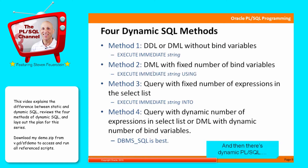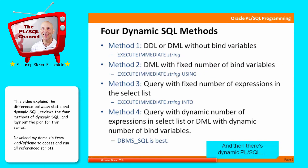The basic idea of method two is that you take variable values in your program and bind them into your string using the using clause. So when executing updates, inserts, or deletes where you have to bind in values, you specify the using clause — that's method two. Method three: executing a select statement with a fixed number of expressions in the select list. At the time you're writing your code, you know you're going to select a fixed set of columns. You use execute immediate with the into clause, just like select into or fetch into.